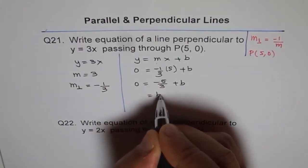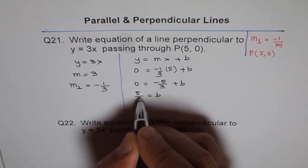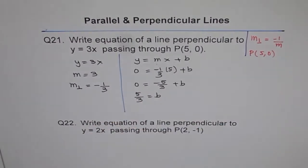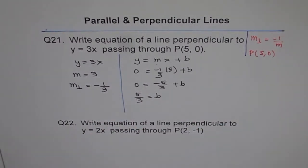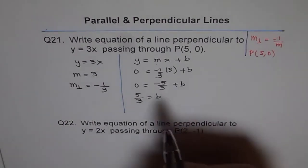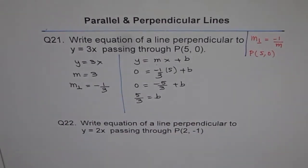So we get 0 equals minus 5 over 3 plus b. And therefore, b equals to, we'll take it on this side, 5 over 3. Right? We'll add it. I've seen students multiplying and then getting lost. Okay, so b is 5 over 3. Perfect.